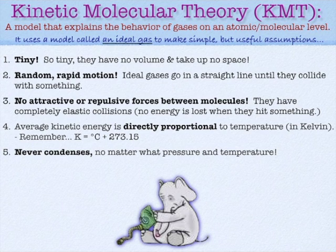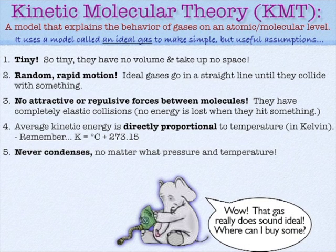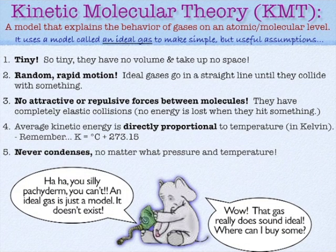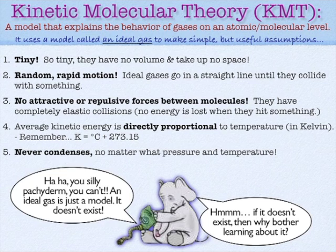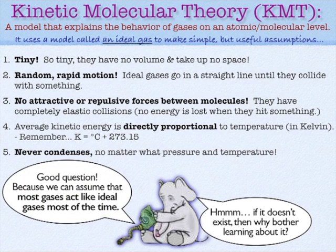Real gases can condense — you've all seen liquefied natural gas and things like that. But an ideal gas, no matter what the pressure or temperature, would never condense. You can't get an ideal gas anywhere; it doesn't exist. But the reason it's useful is that most gases act like an ideal gas under most conditions, just like students — most students act like an ideal student most of the time.